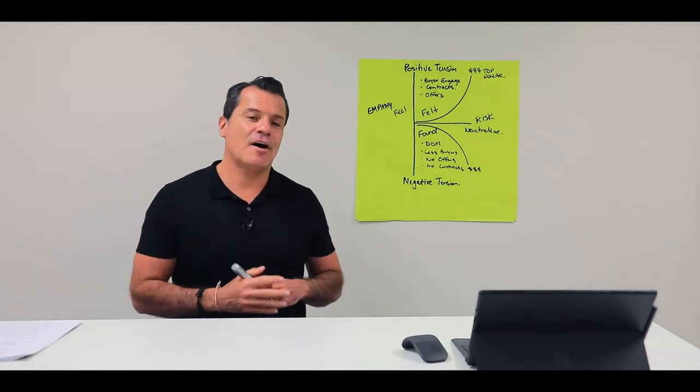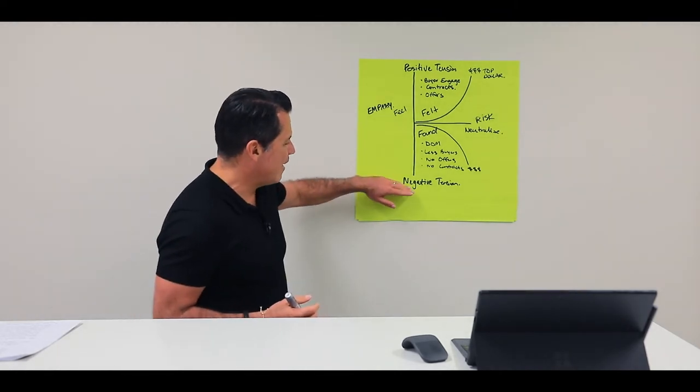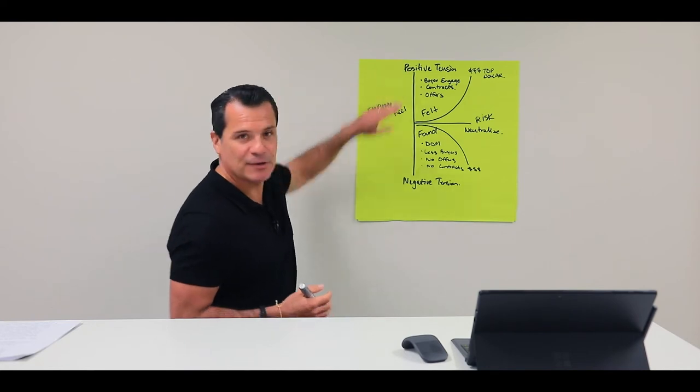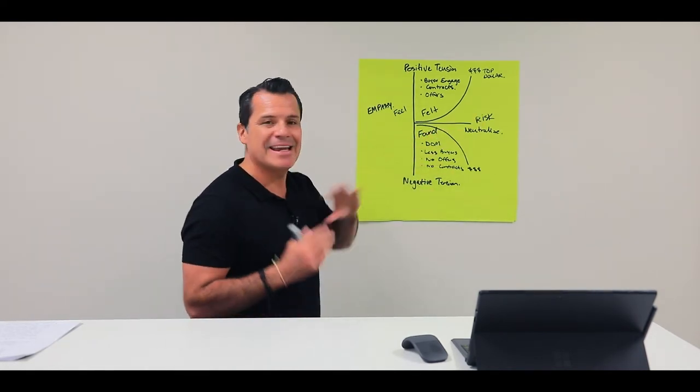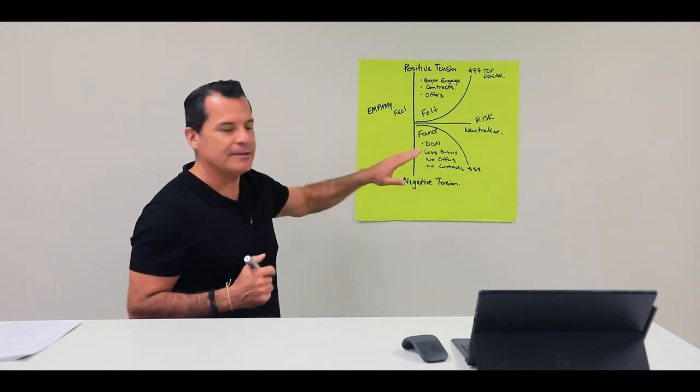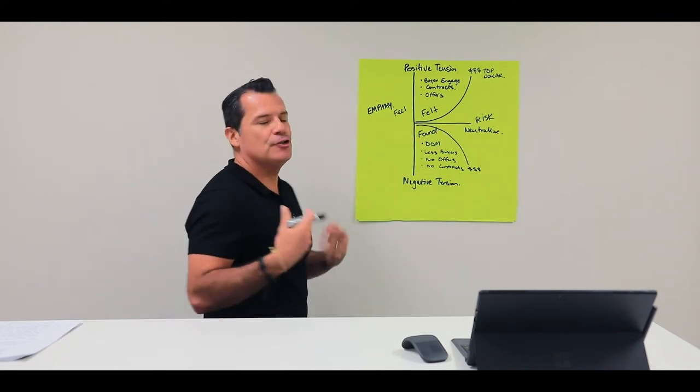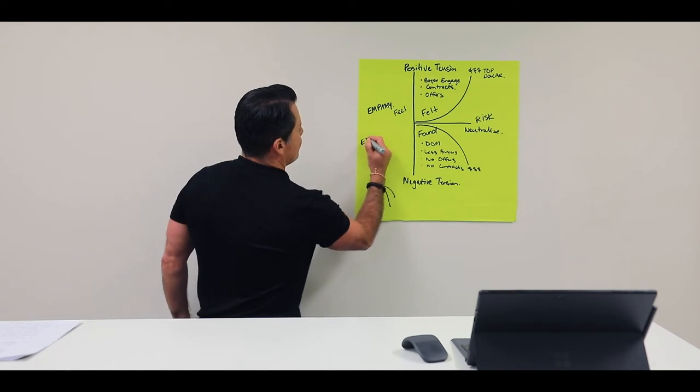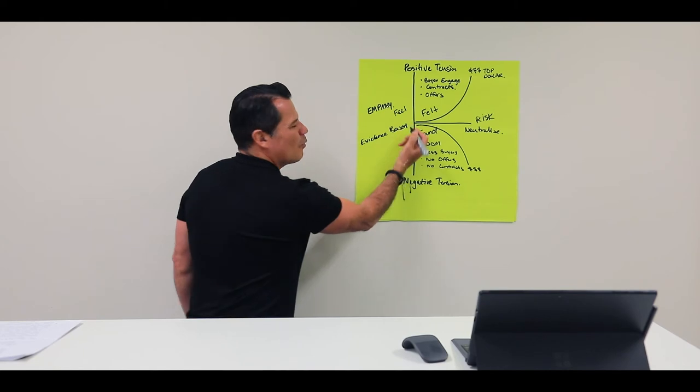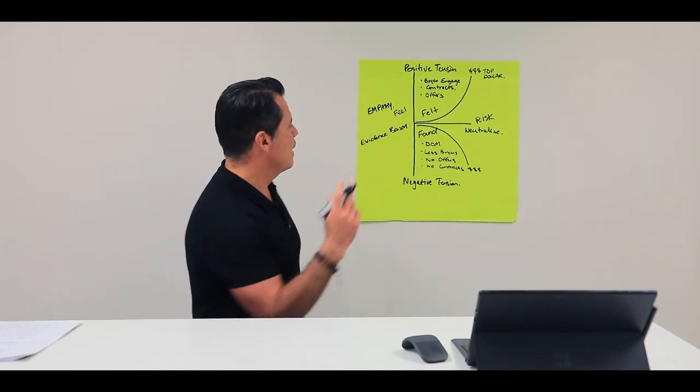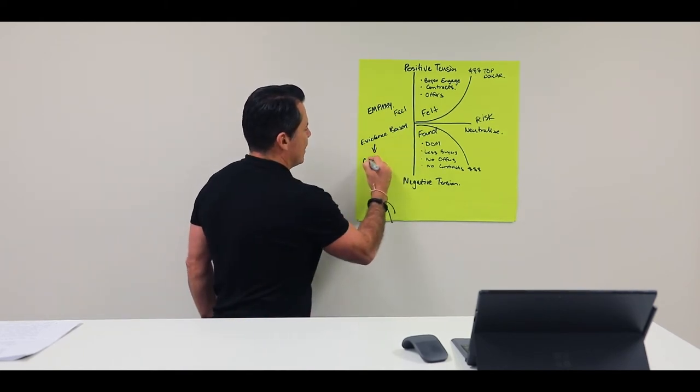So my thing is this, guys, you need to understand how can you flip the negative into the positive, eliminate risk for them when they're making a decision, but understand you need to neutralize it. But the great way to do it is evidence-based. So they wanna go, has anybody else done this before? Or are we just the first people that are doing this? Evidence-based comes with a great case study.